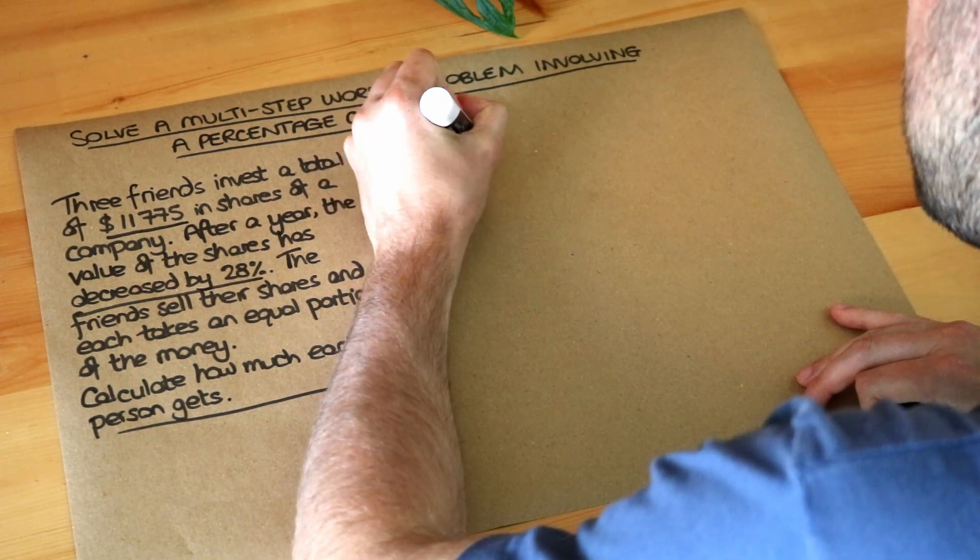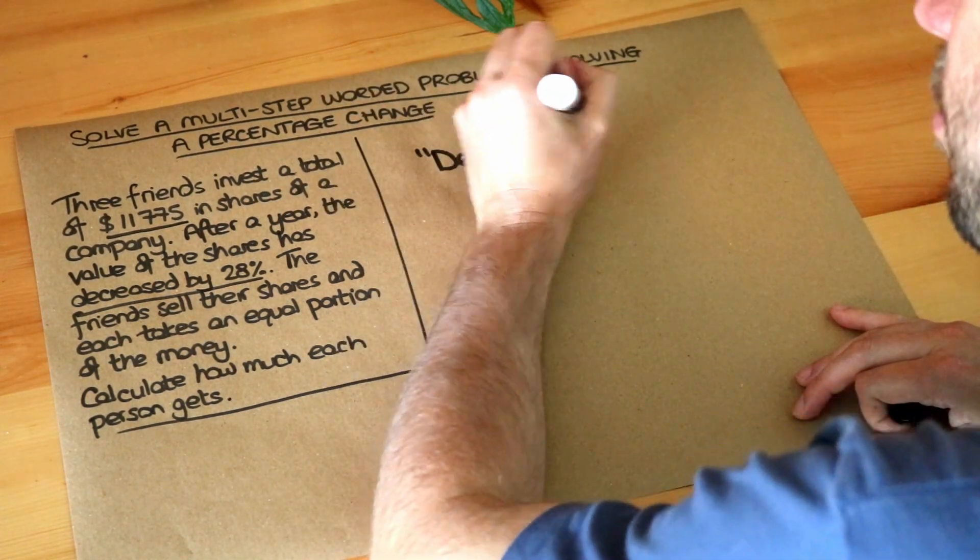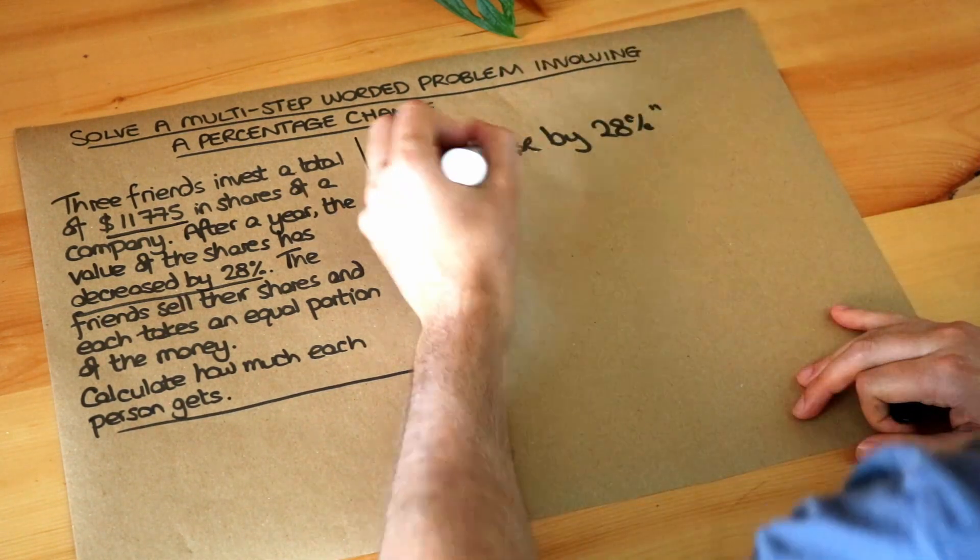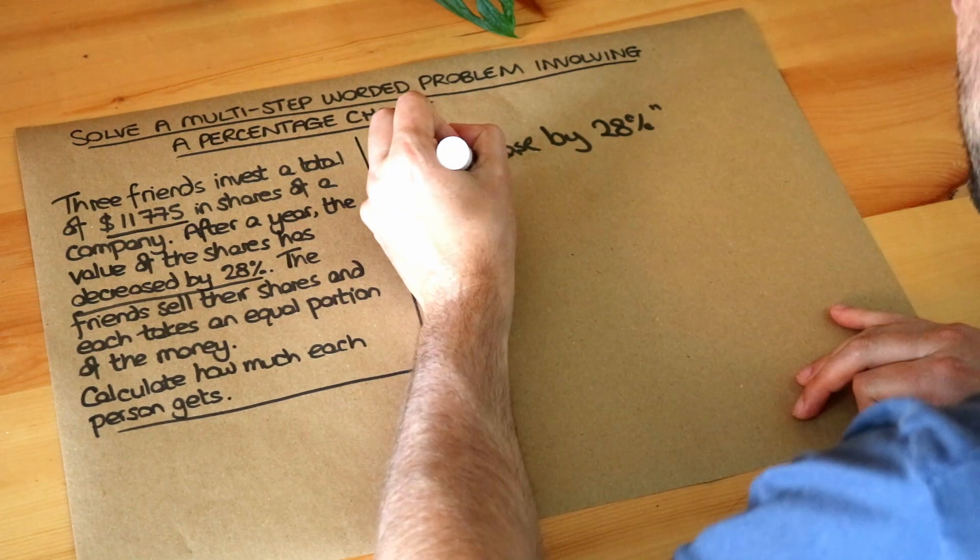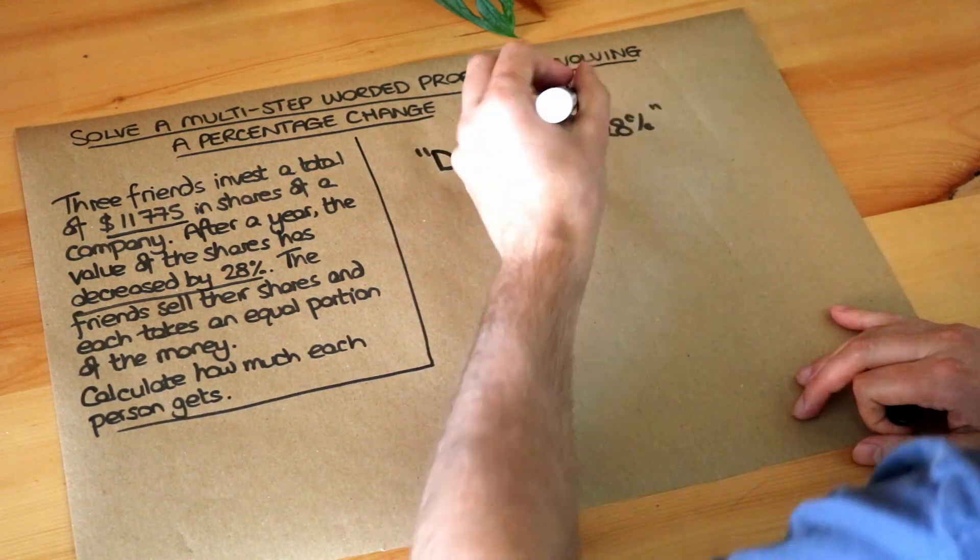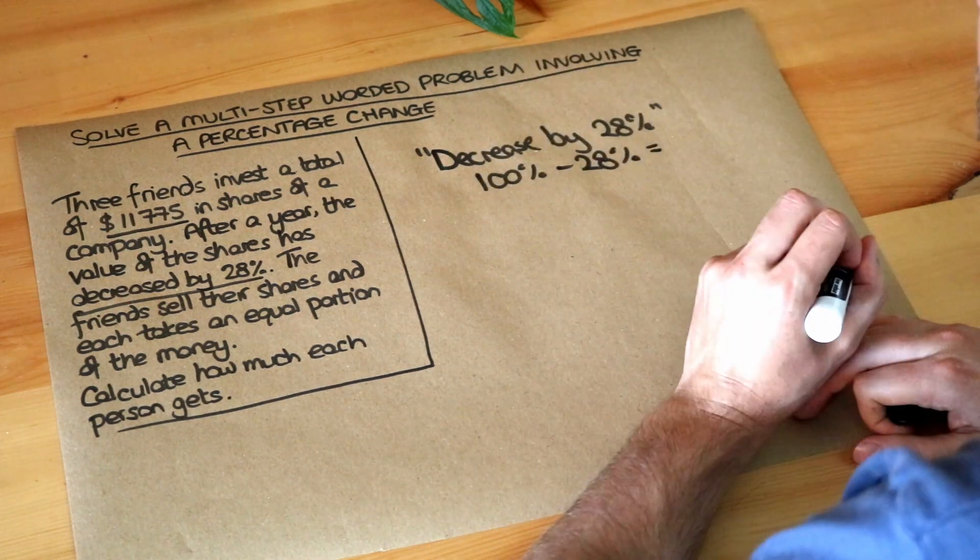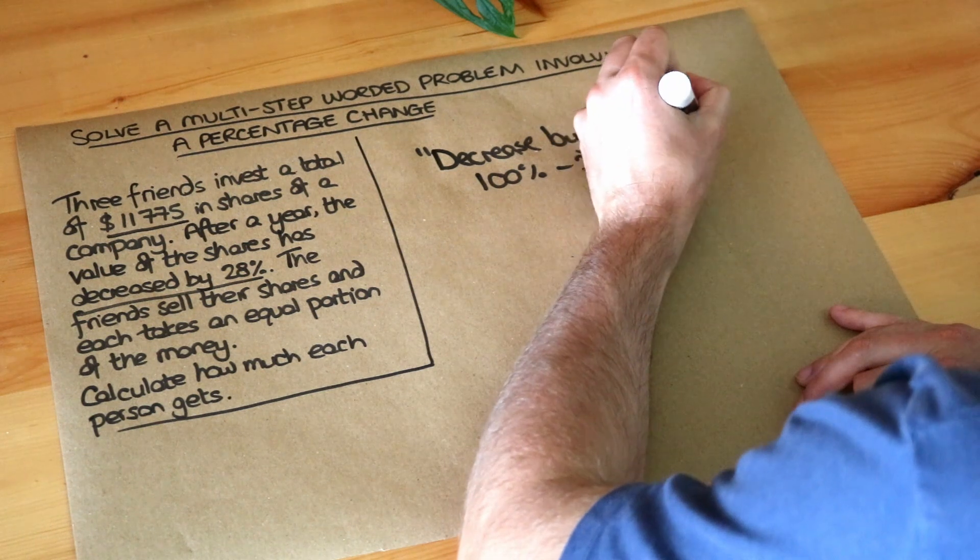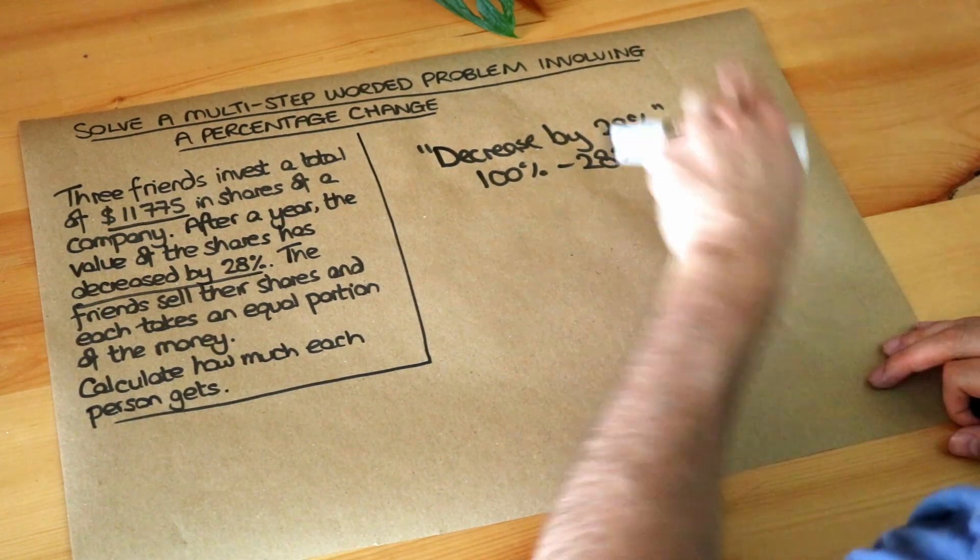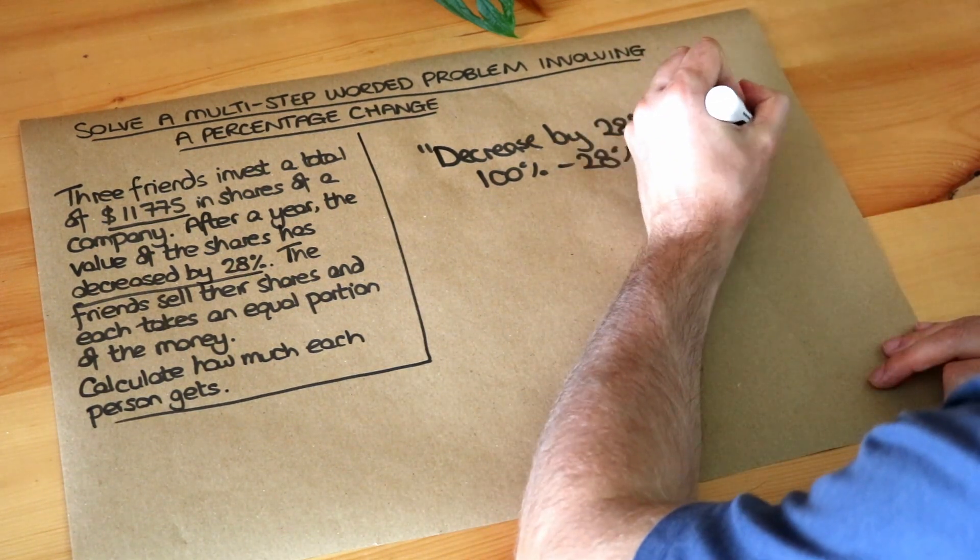So let's first convert the decrease by 28% into a decimal multiplier. Now remember from a previous video, everything starts at 100%, so if we decrease it by 28%, 100 minus 28 is 72%. And we then convert that percentage to a decimal, so we just divide it by 100, that becomes 0.72.